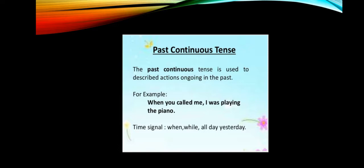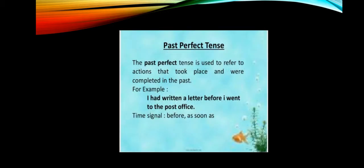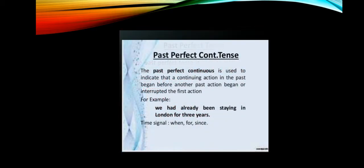Past perfect tense is used to refer to actions that took place and were completed in the past before another action. If two actions take place, the earlier action is written in past perfect tense and the later action in simple past. Keywords include 'before,' 'as soon as,' and 'when.'